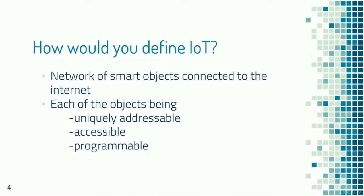In brief, the Internet of Things is a network of smart objects that can be connected to the Internet. The features of these objects are that they should be uniquely addressable, accessible over the Internet, and programmable as well.